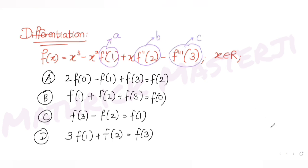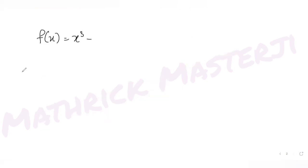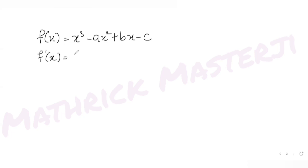So f(x) = x³ − ax² + bx − c. Now let's differentiate it. We get f'(x) = 3x² − 2ax + b, since the derivative of x is 1 and the derivative of a constant is zero.